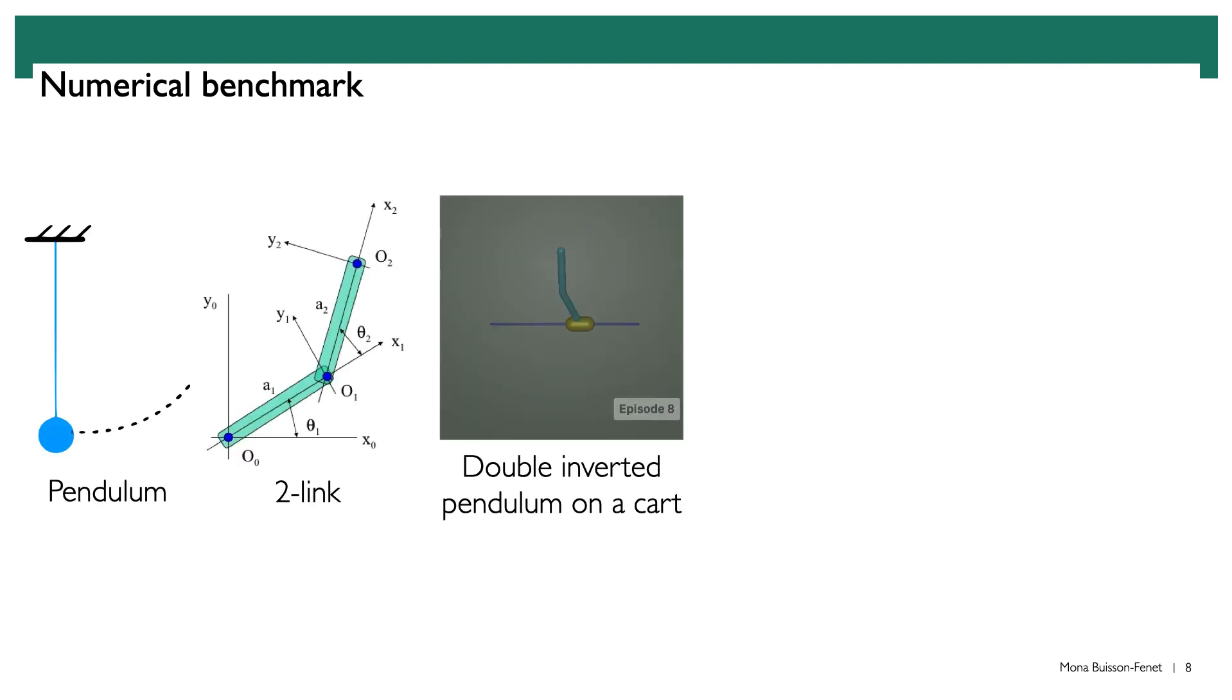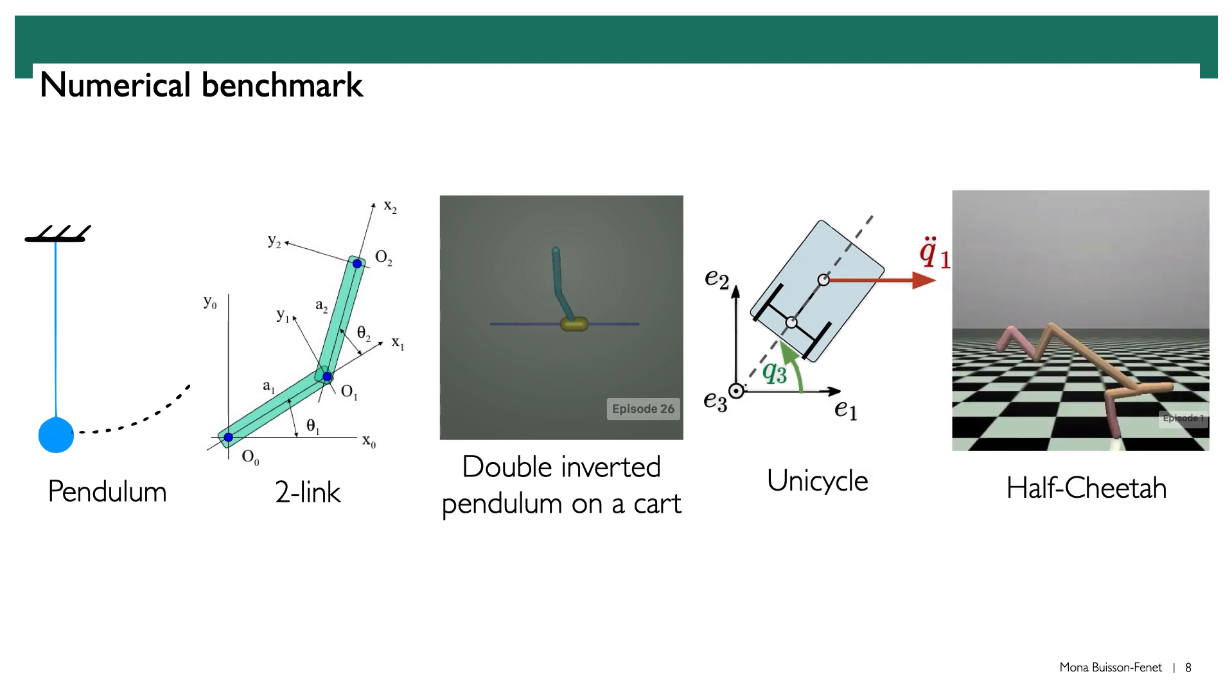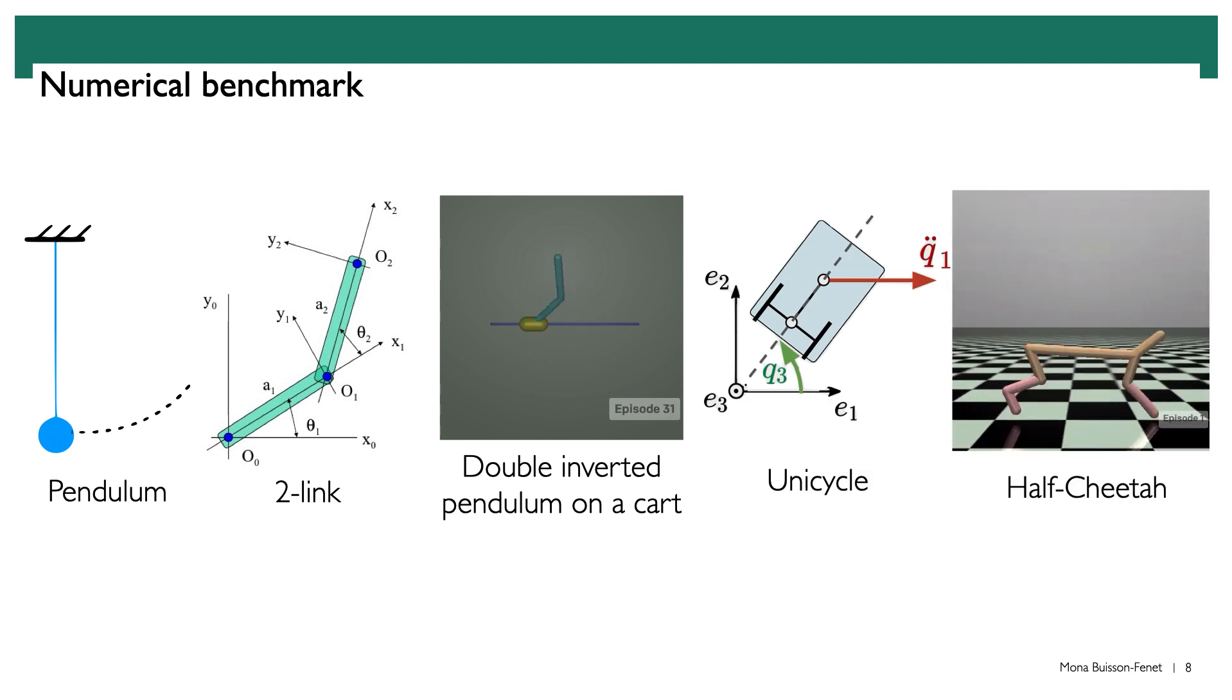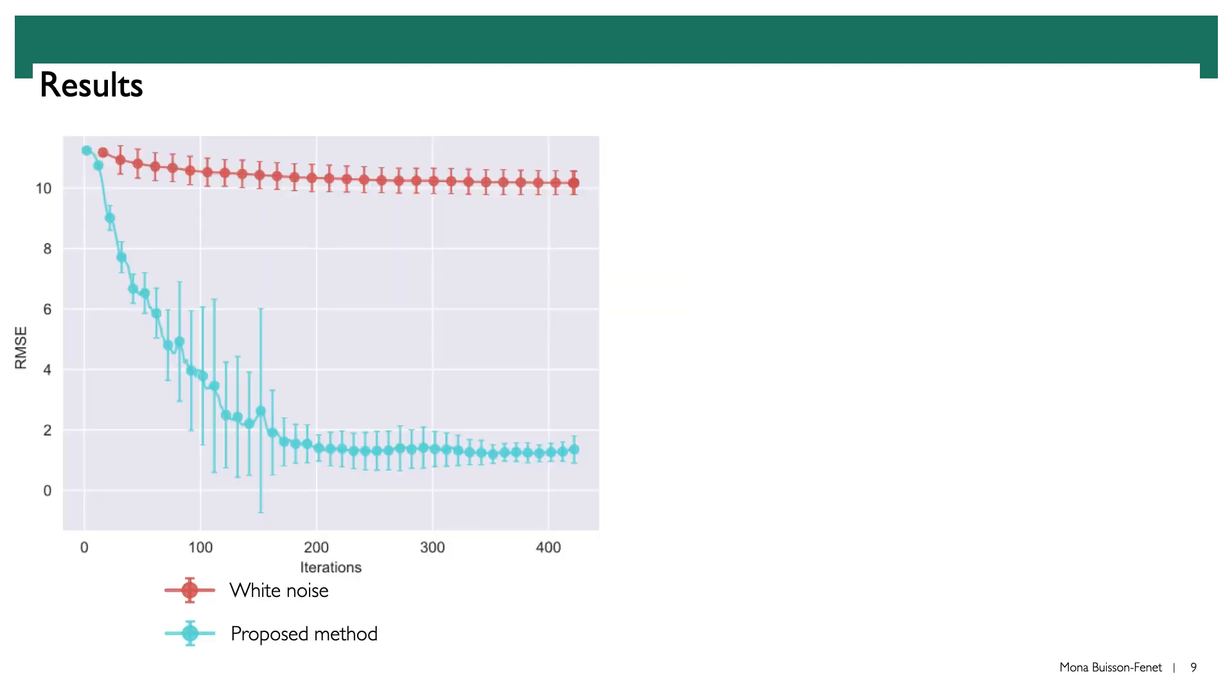We demonstrate our method over an extensive numerical benchmark, which includes five dynamical systems: a pendulum, a two-link robot, a double inverted pendulum on a cart, a unicycle, and the half cheetah environment from OpenAI gym. We compare our method against some more classic open-loop signals from system identification and some other baselines, including a greedy one and one based on the state-of-the-art of active learning for static systems.